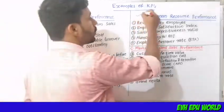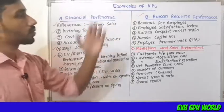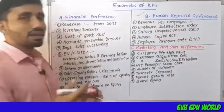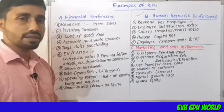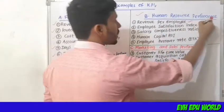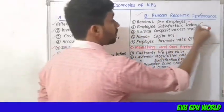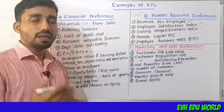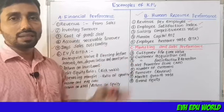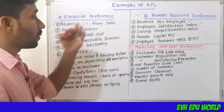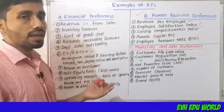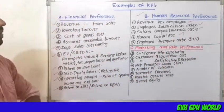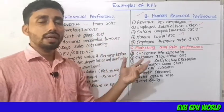The second part is human resource performance indicators. These include revenue per employee, employee satisfaction index, salary competitiveness ratio — used to compare the firm's salary ratio to industry companies — and human capital ROI, that is, the return on investment from benefits to employees.